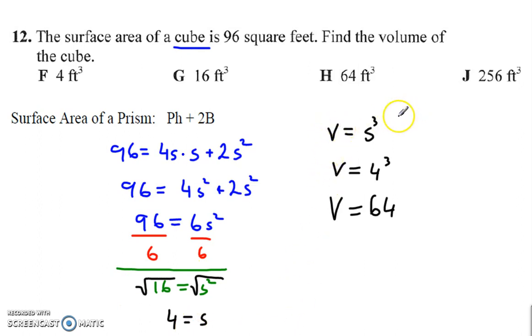The volume is length times width times height, where length, width, and height are all the same. So it's side times side times side, or side cubed, which gives us 64.